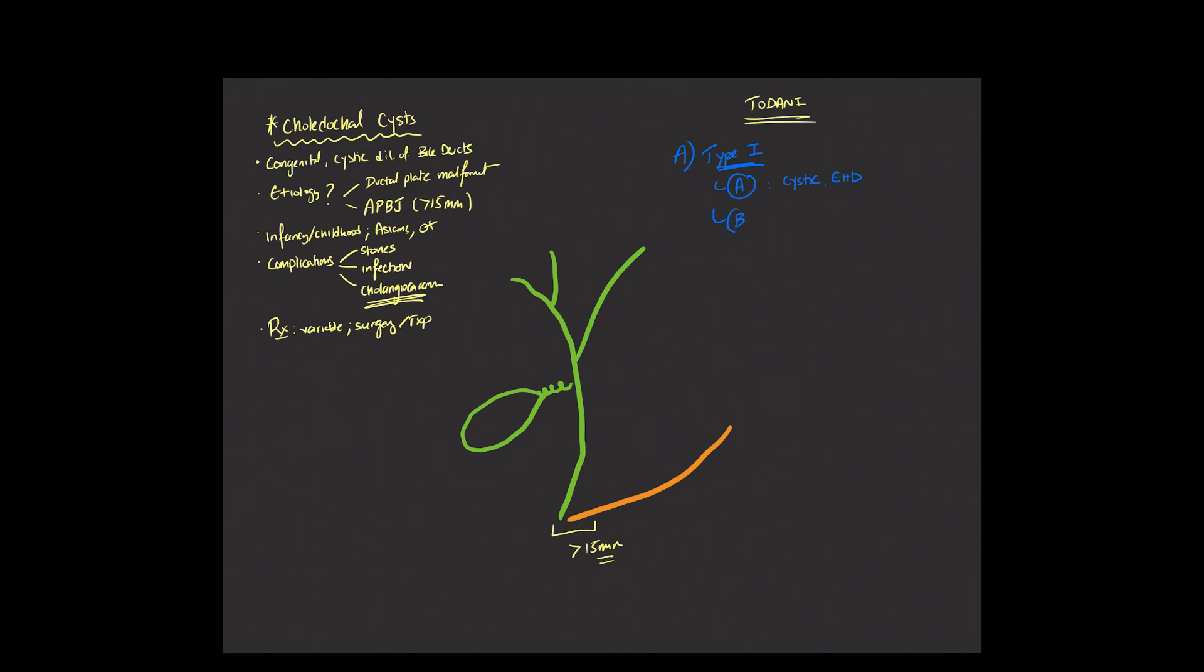Type 1b, on the other hand, is a more focal cystic dilatation seen involving the extrahepatic biliary tree. So it's not as extensive as can be seen in type 1a.